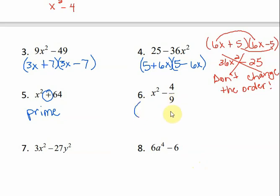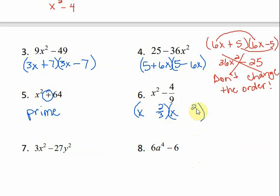Number six. Two sets of parentheses. The square root of x squared is x. When we have a fraction, as long as each part of the fraction is a perfect square, we can take the square root — so the square root of 4/9 is 2/3. Our answer is (x + 2/3)(x − 2/3).